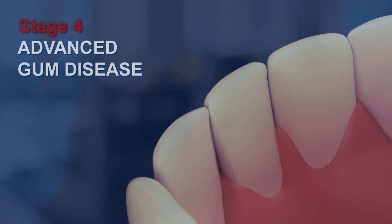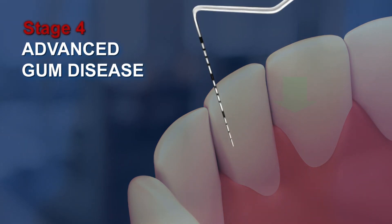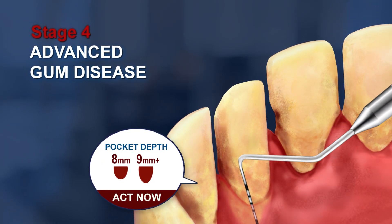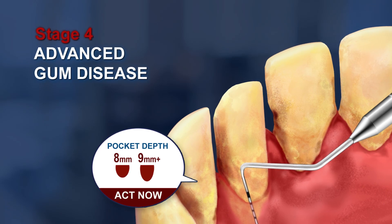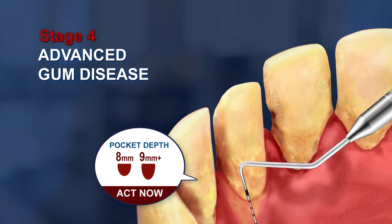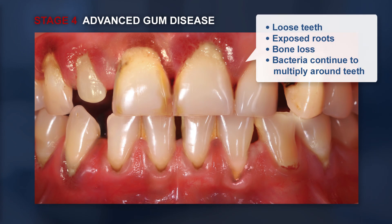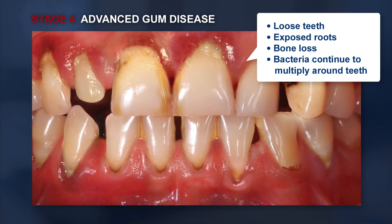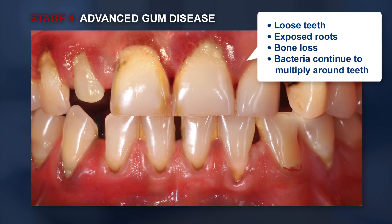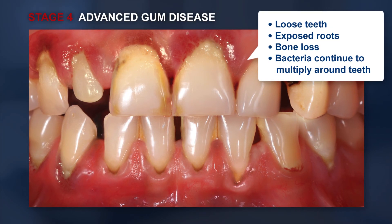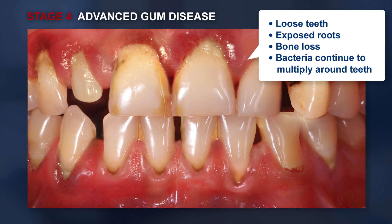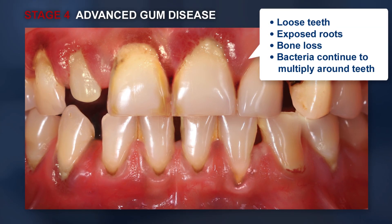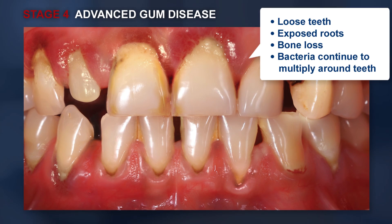As gum disease advances to stage 4, pocket depths increase to 8 to 9 millimeters or more, and further deterioration of teeth and surrounding bone occurs. Teeth will become loose and roots will become exposed as further bone is lost. Bacteria and their toxins will now invade the blood vessels in the gum tissue and travel to vital organs. In addition to scaling and root planing and a local antibiotic, some teeth may need to be extracted.